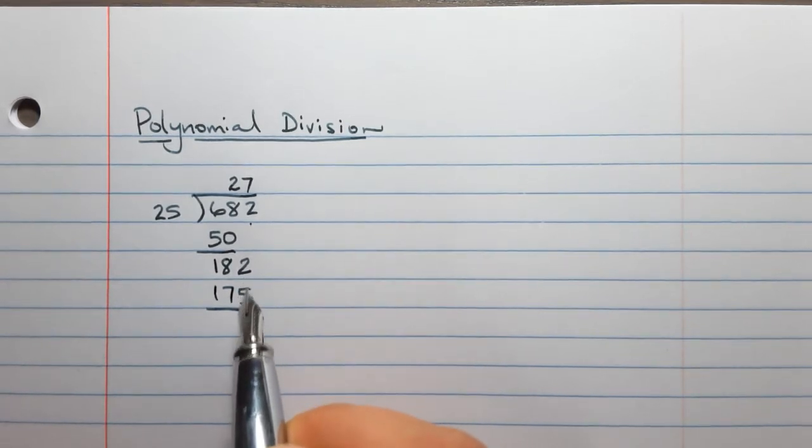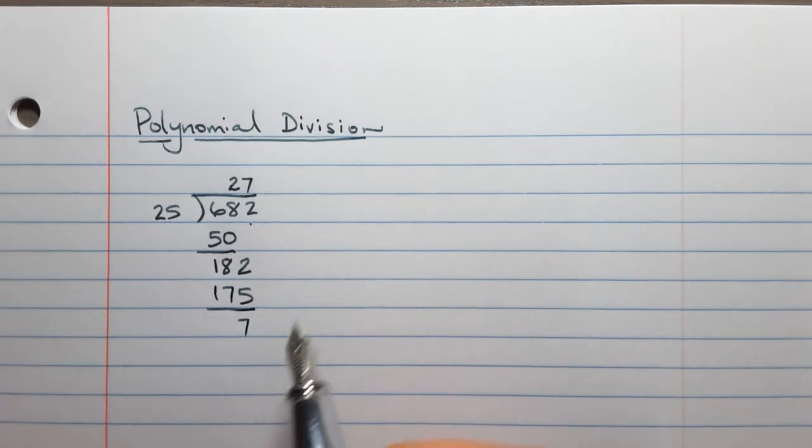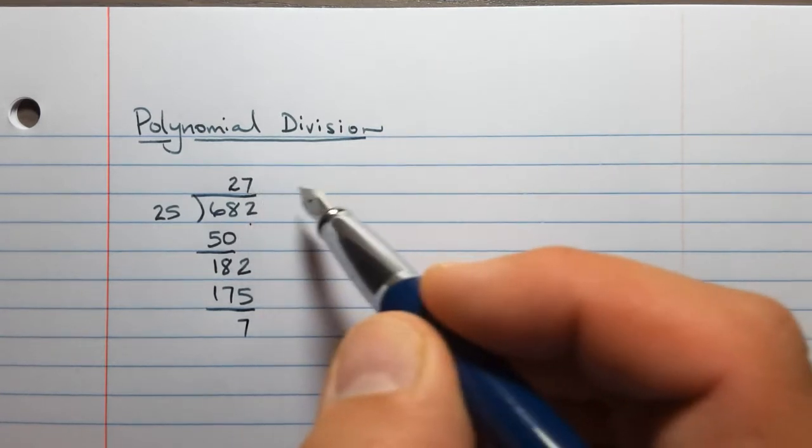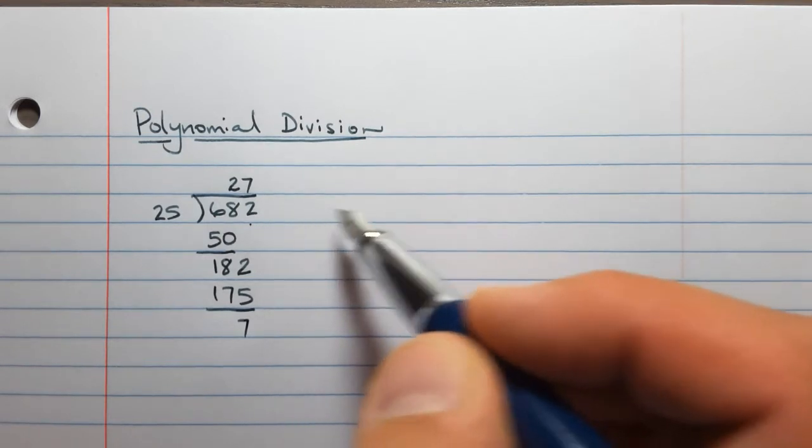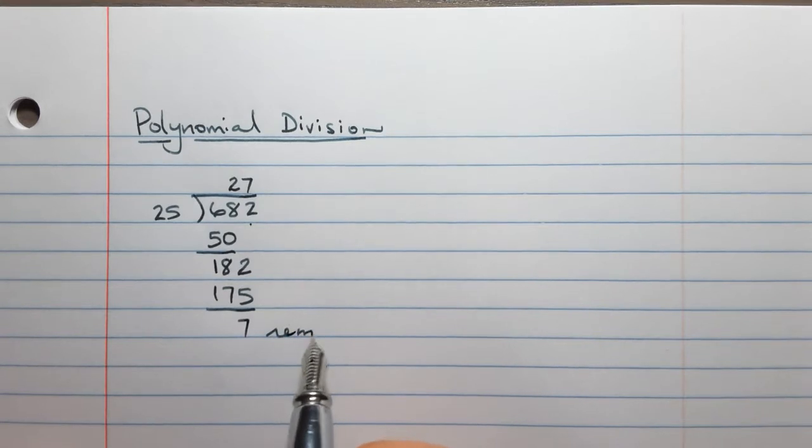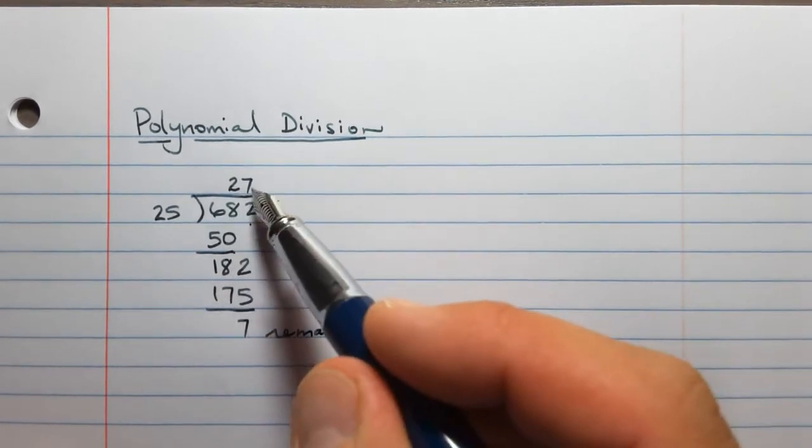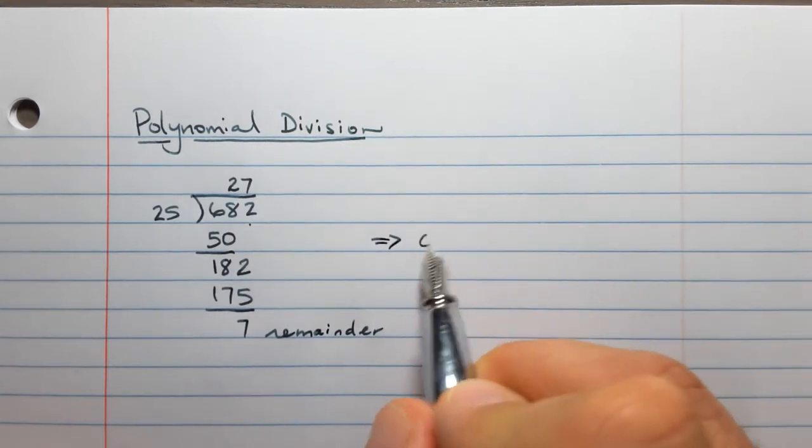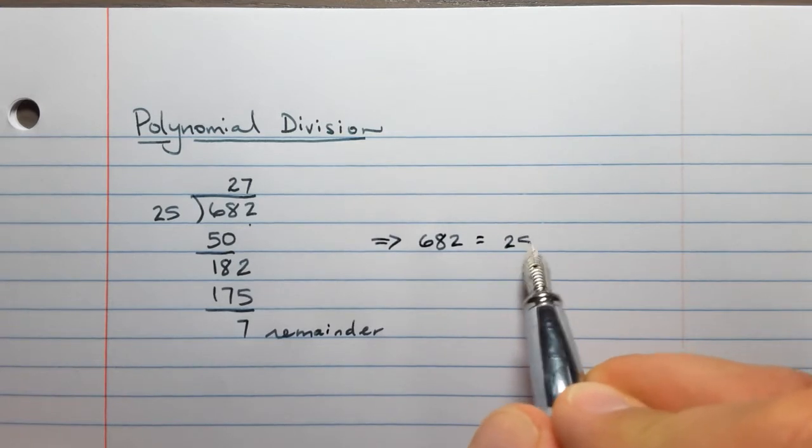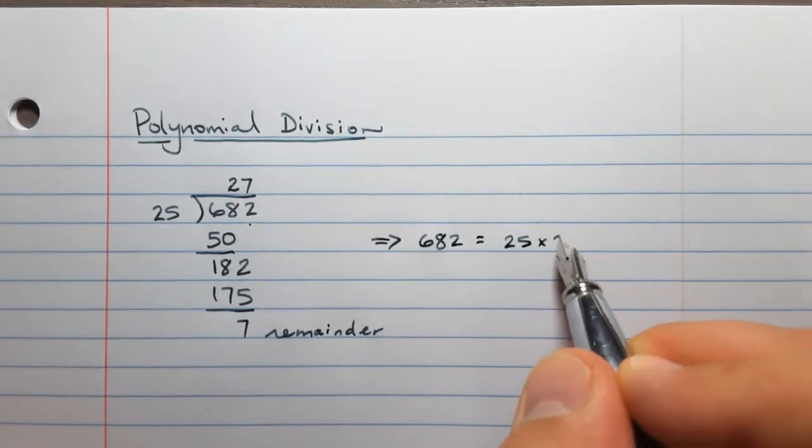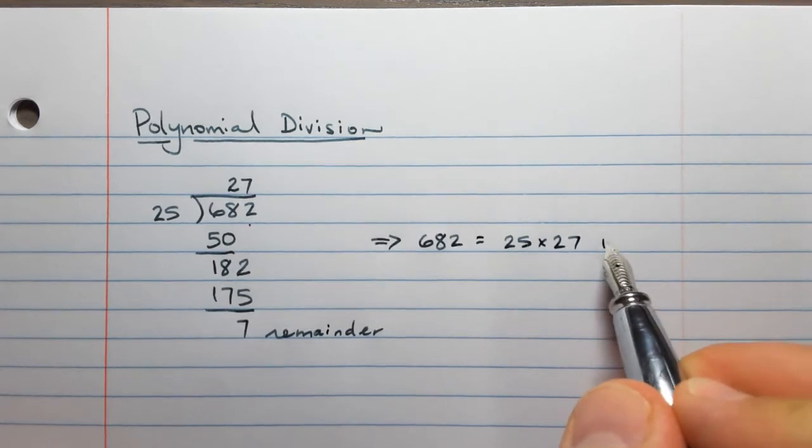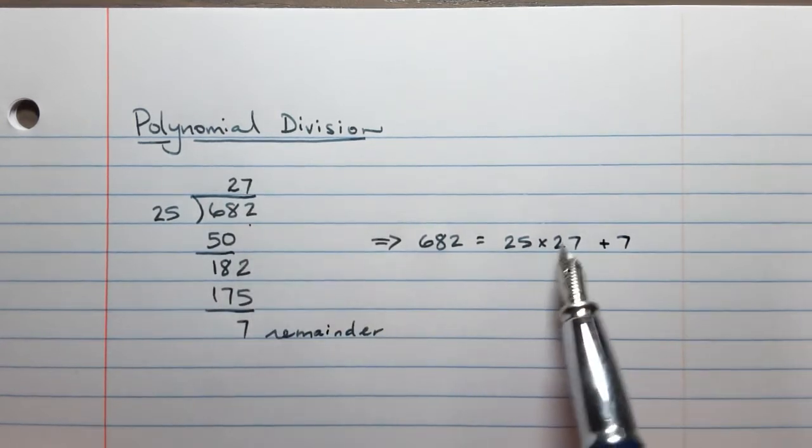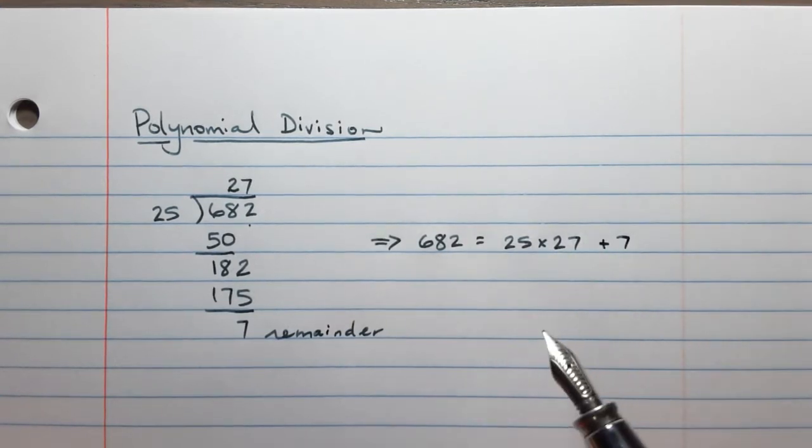Doing the subtraction, we're left with 18. We bring down this 2 to get 182. Now we divide 182 by 25, and I can get 7 of those. 7 times 25 equals 175. Subtract again and we're left with 7. There are no more places to go. We want this remainder. 682 is equal to 25 times 27 plus 7.